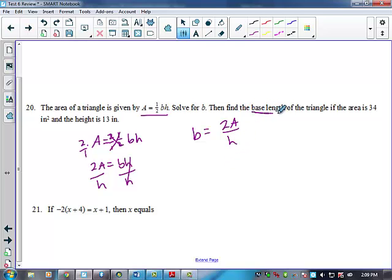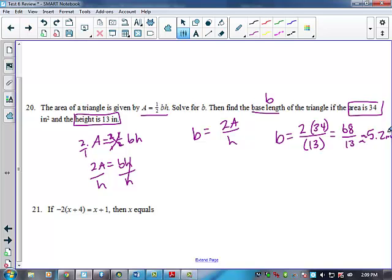It wants me to find the base length, which would be B, if the triangle has an area of 34 square inches and a height of 13 inches. So all I'm going to do with that information is what? I'm going to plug it in right here. So I want to find B equals 2 times what's A? 34. Over what is H? 13. So what do I get? Oh, wait. Yeah, I get 68 over 13. So approximately 5.2 inches.